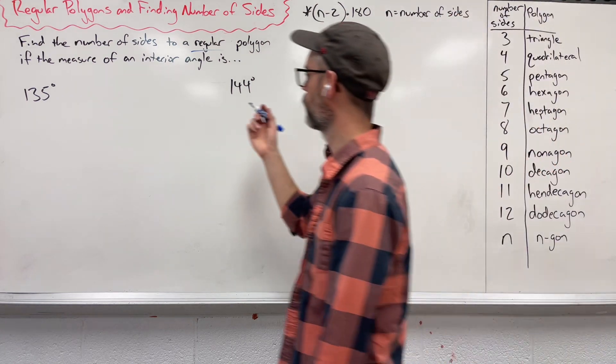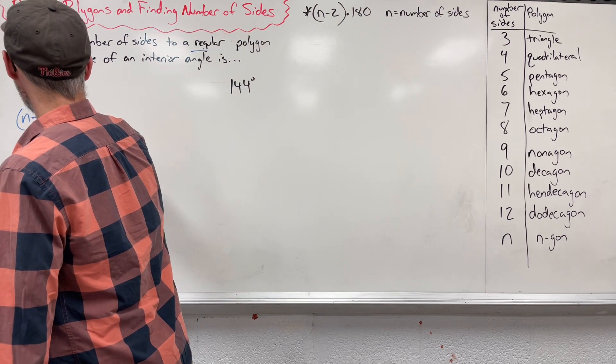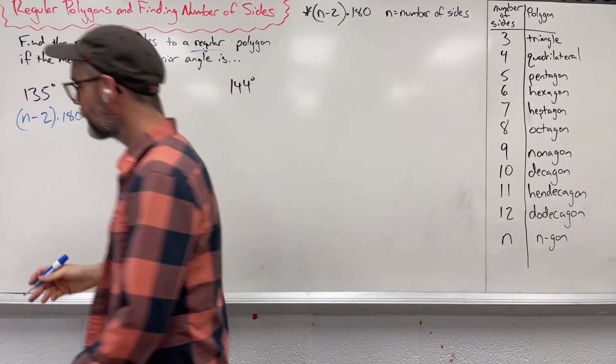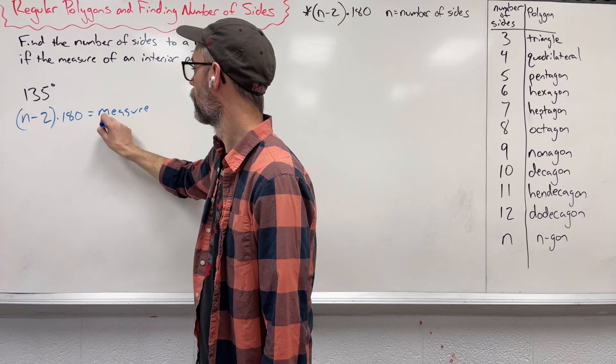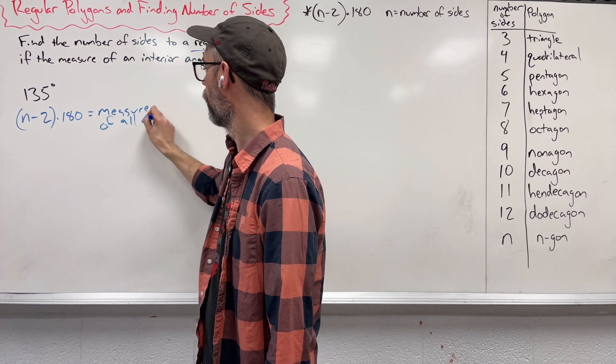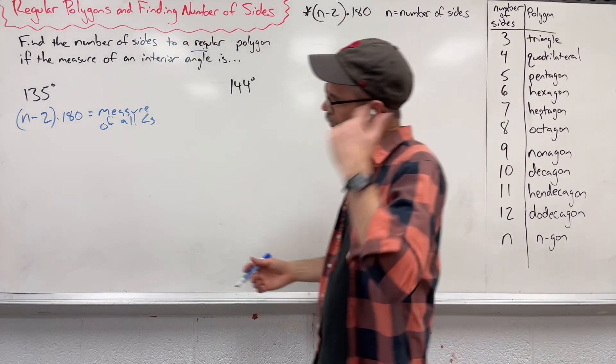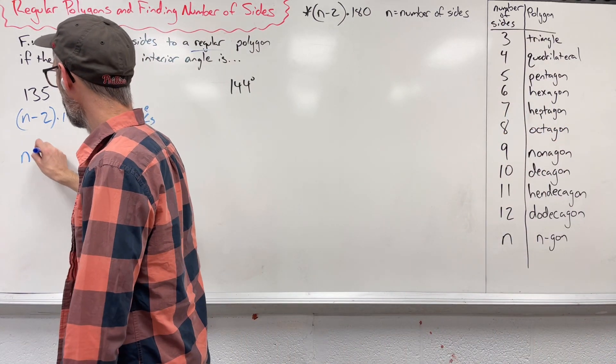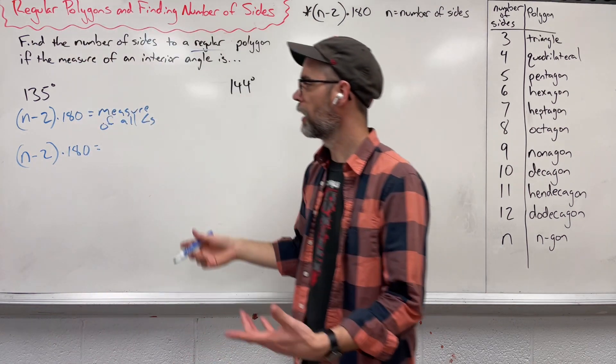So let's use this for a second. We know n minus 2 times 180. This is going to give us the measure of all the angles added together, the sum of them all. So let's think about this. We know that n minus 2 times 180 equals the measure of all the angles.